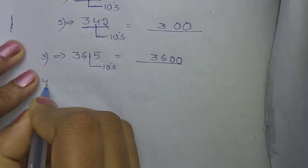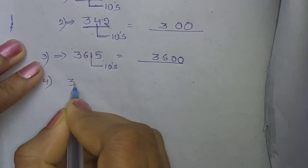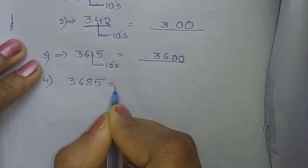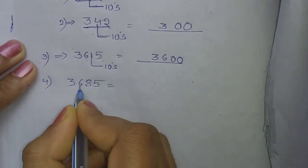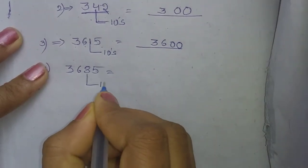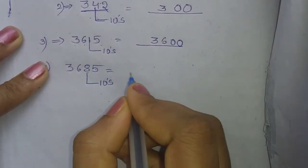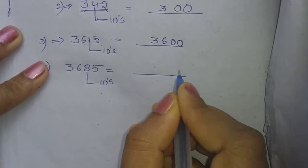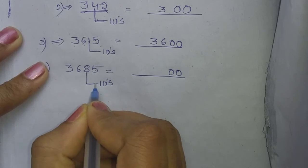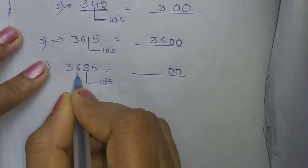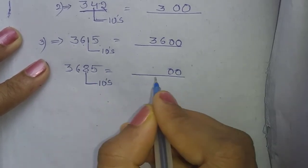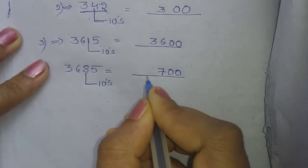For example, 3,685. This has ones place, tens place, hundreds place, and thousands place. The tens place is 8. Since 8 is 5 or above, we round up. The tens place becomes 0. We add 1 to the hundreds place: 6 plus 1 equals 7. The thousands place stays at 3. So the answer is 3,700.